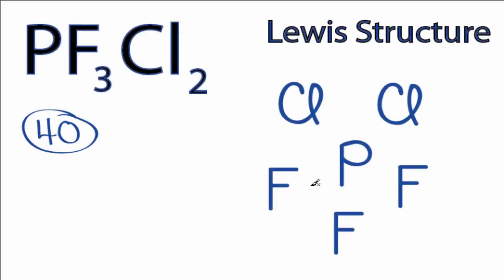We have 40 valence electrons for the PF3Cl2 Lewis structure. We'll put lines between atoms to form chemical bonds, each line represents 2 valence electrons.